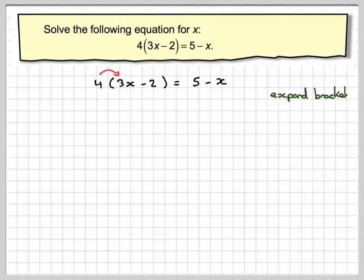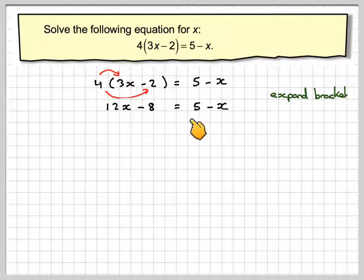So you do 4 times 3x which gives you 12x. 4 times minus 2 which will give you minus 8. And on this side it still stays the same which is 5 minus x. And in most of these equations they come down to solving an equation with x on both sides.